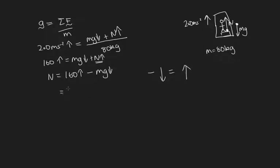We can write this as 160 newtons upwards plus mg upwards. So now all we need to do is substitute everything in. We've got 160 upwards plus mg, which is 80 times 9.8 upwards.